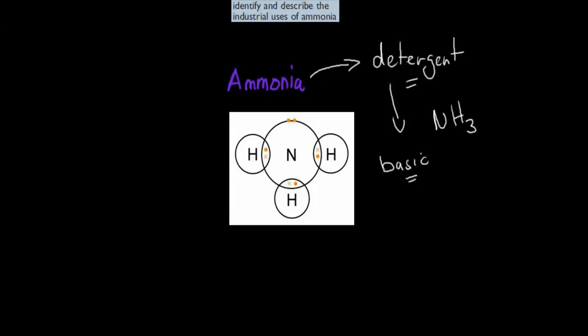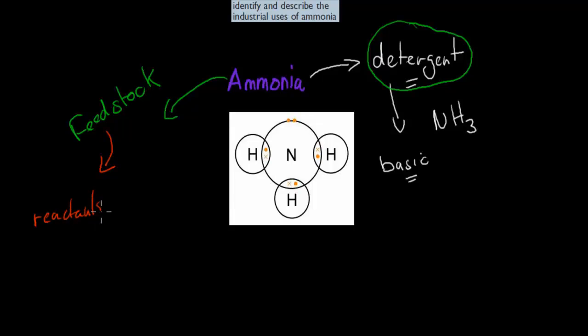It's often used directly as a detergent, but it also has different roles. That other role is it acts as a feedstock for lots of different types of substances. A feedstock means that we have reactants that will go into different types of products. Ammonia is often, in many cases, somewhere within these reactants, and they help produce very useful products.